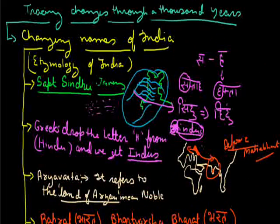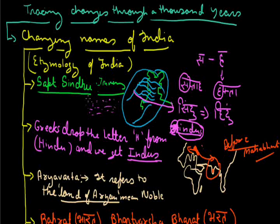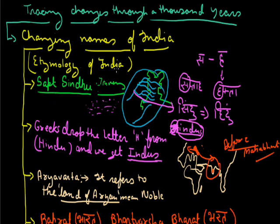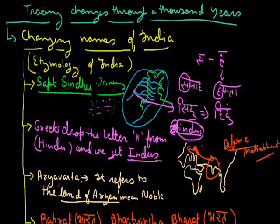So this is how we see that a lot of names came for India. Let us revise the whole topic. In the second part, we discussed India's etymology — the origin of the name — starting from Sapt Sindhu, meaning the region of seven rivers.